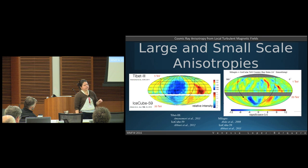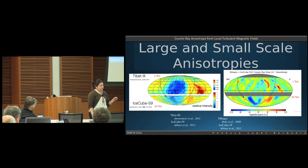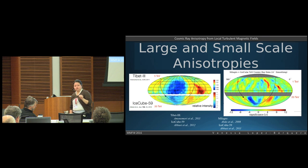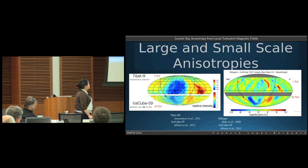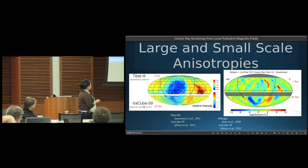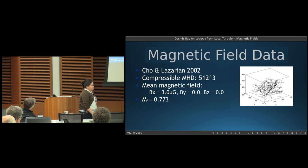So the main question here is: do turbulent features actually create these small-scale structures that we observe? What I did was simulations trying to prove that this is actually the case.